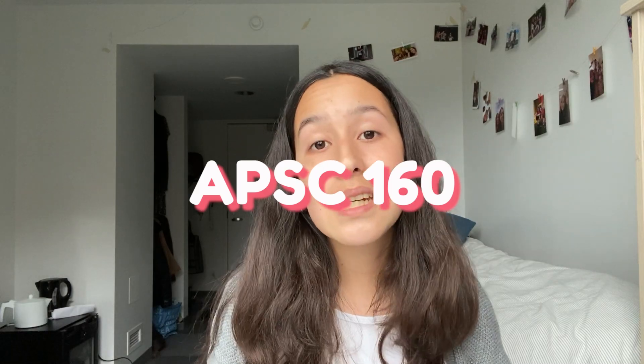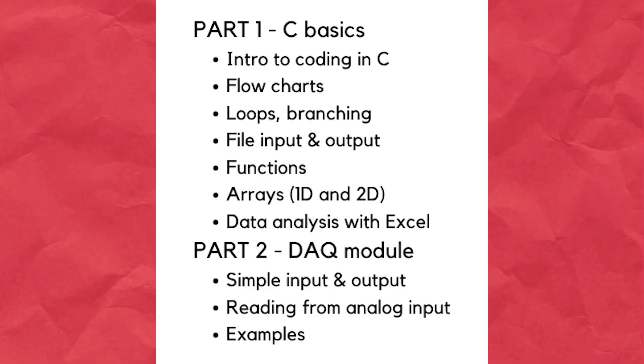Next up, we have AppSci 160, your coding class. The first half is a software module where you're coding in C, and then the second half uses a DAC module specific to UBC with an online virtual software simulation. The style of learning is flipped classroom — you watch lecture videos before class, then attend class for clicker questions and a worksheet, and afterwards complete a pre-lab and a lab. If you do the pre-lab, you'll be set for the lab. It's really important to build a good foundation from the beginning, because concepts build off one another.